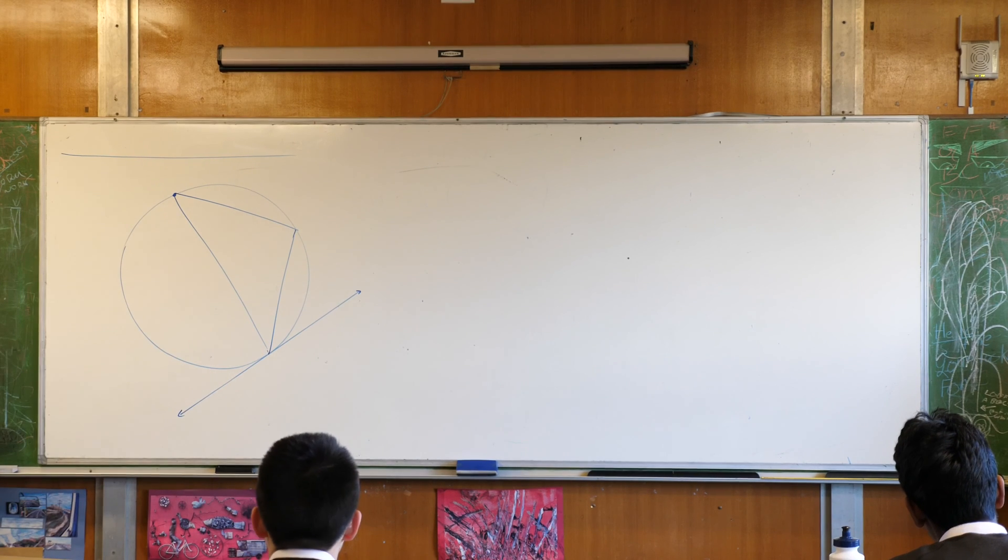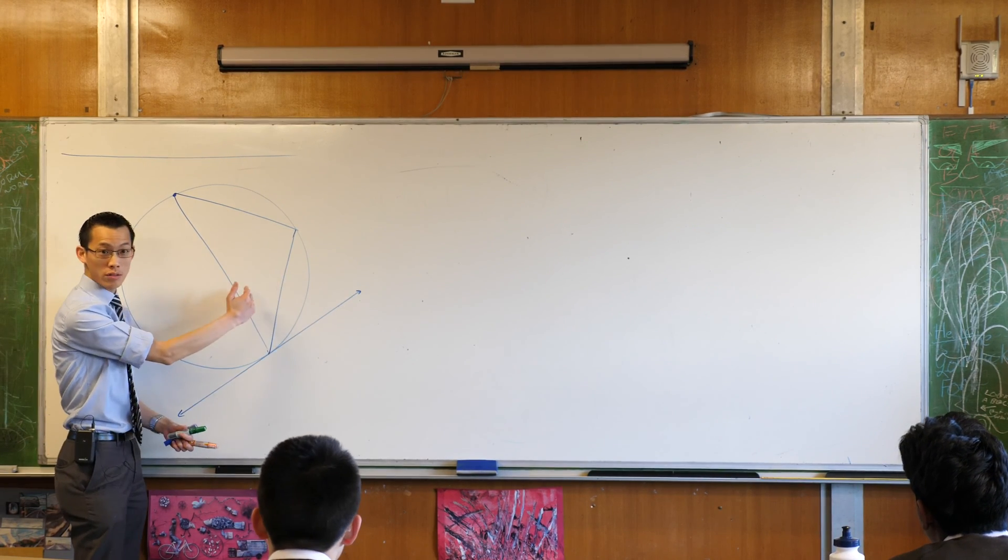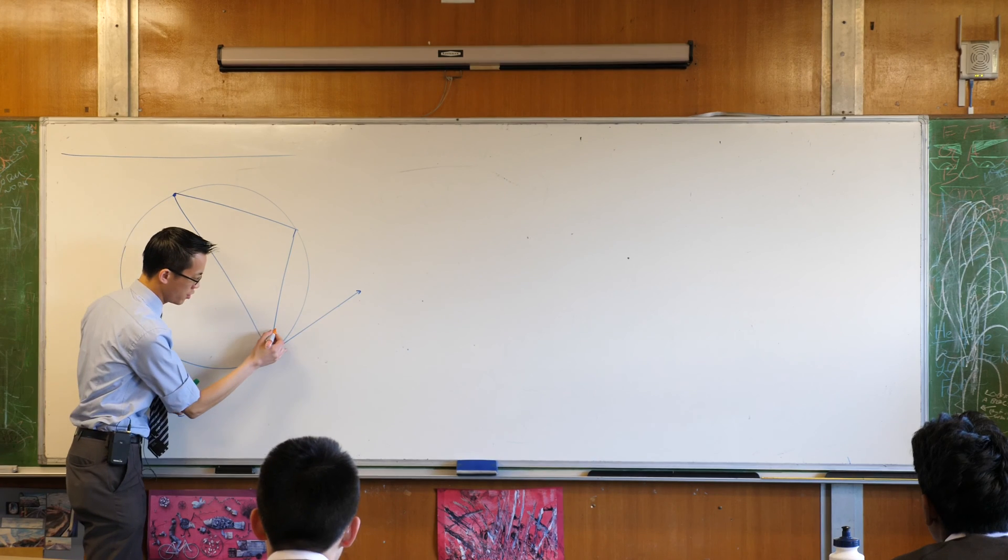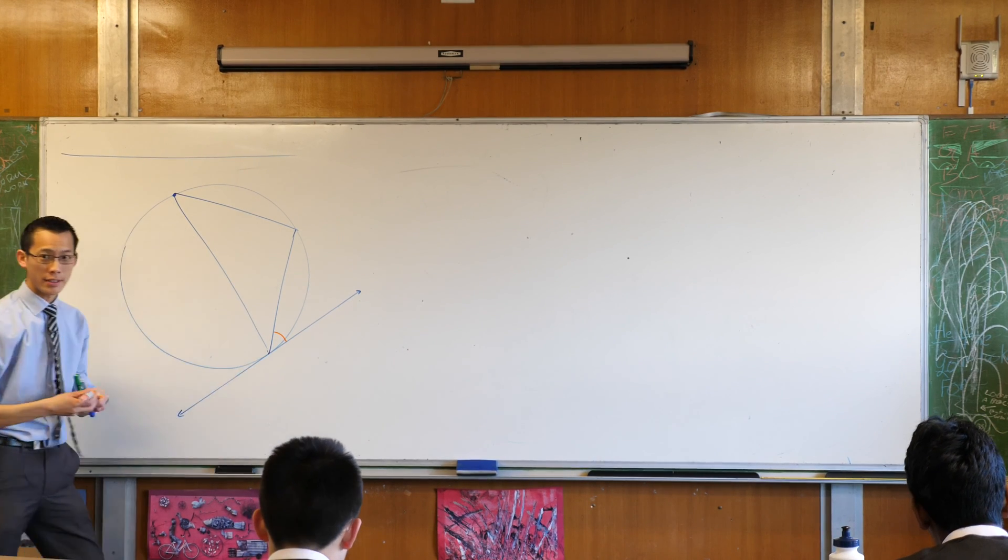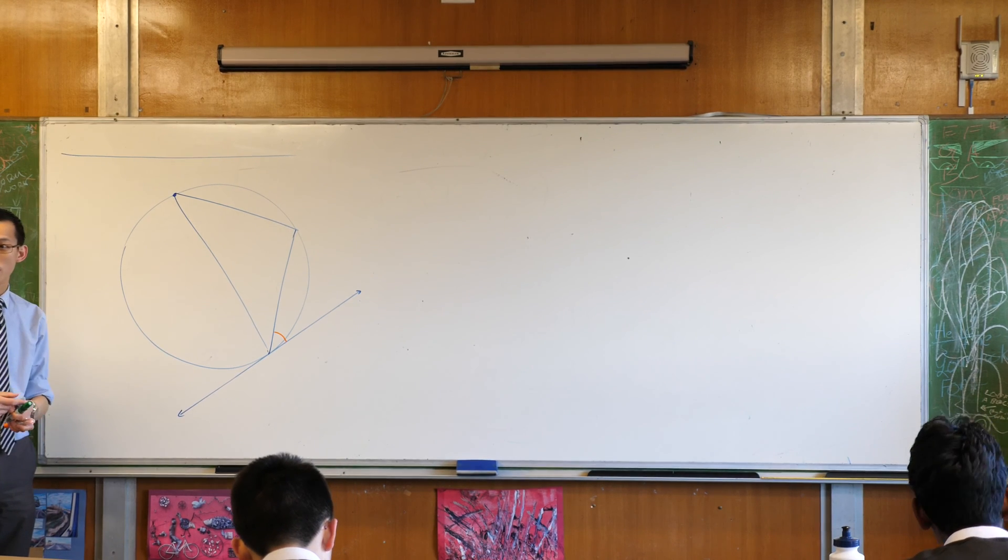I want you to look very carefully, I'm going to mark them in with two different colours. I want you to look very carefully at the angle between your tangent and your chord, tangent and your chord, so I'm going to mark it in orange. Have a look at this angle over here,